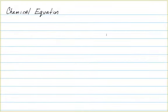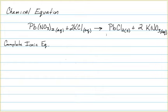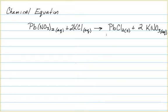In this video, we're going to take a look at chemical equations, and more specifically what we call net ionic equations. Let's start off with a chemical equation. On the reactant side, we have lead-2-nitrate in the aqueous state, reacting with 2 moles of potassium chloride, also in the aqueous state. On the product side, we see that we form lead-2-chloride in the solid state, and 2 moles of potassium nitrate in the aqueous state.